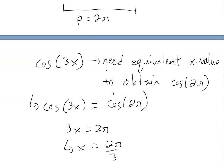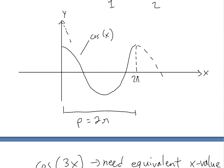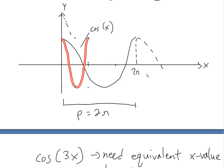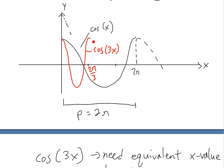Rearranging, x equals 2π/3. This is less than 2π, so we've divided the period by 3. If I graph cos(3x) in red, instead of reaching its period at 2π, it now completes a cycle at 2π/3. So the period is squeezed — cos(3x) has period 2π/3. Multiplying by 8 just extends it up or down but doesn't change the period.